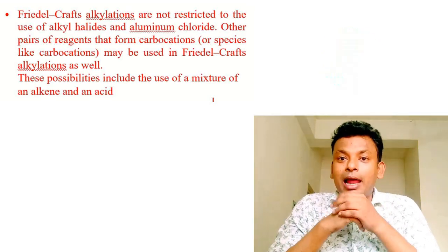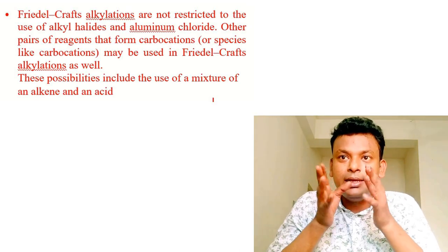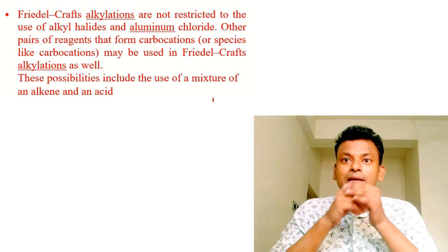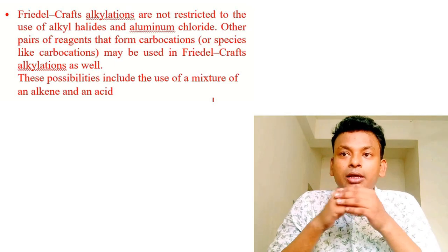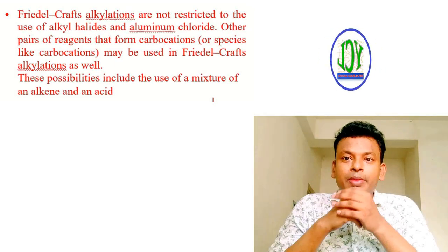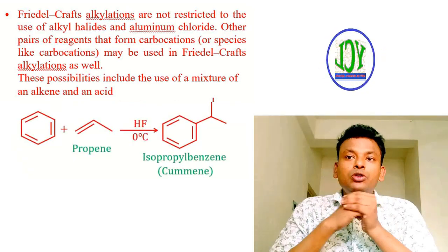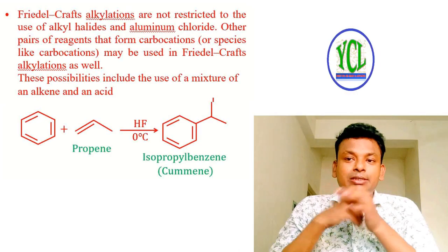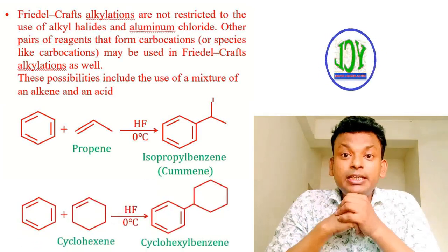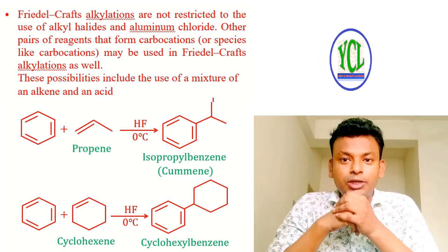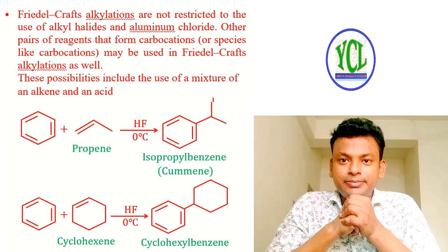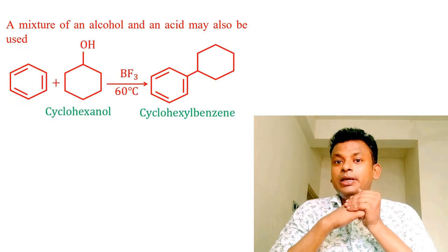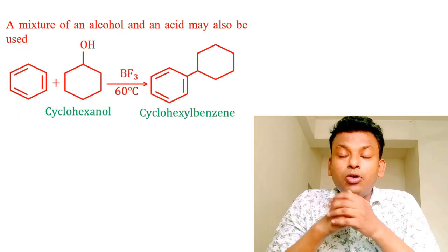Friedel-Crafts alkylation is not restricted to alkyl halides and AlCl₃ — other reagents that form carbocations can also be used. This includes: a mixture of alkene and acid (e.g., benzene + propene + HF at 0°C → isopropylbenzene/cumene); benzene + cyclohexene + HF at 0°C → cyclohexylbenzene; a mixture of an alcohol and acid (e.g., cyclohexanol + benzene + BF₃ at 60°C → cyclohexylbenzene).